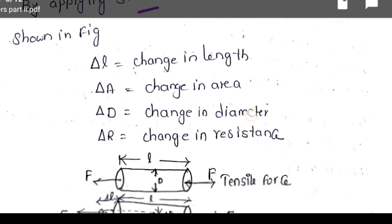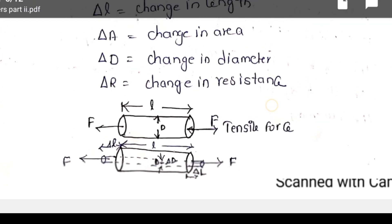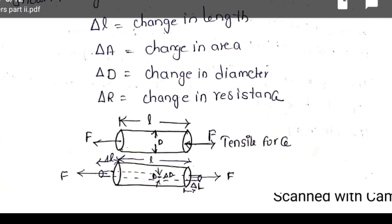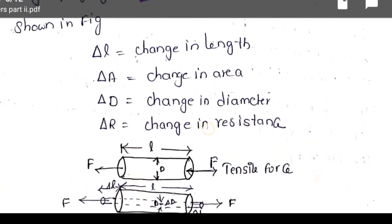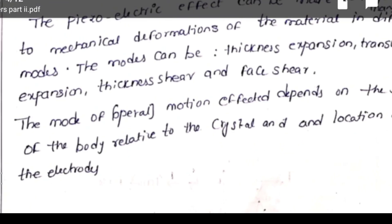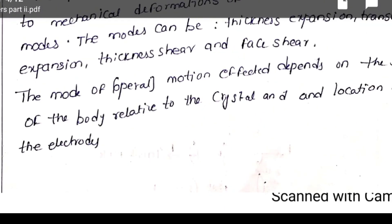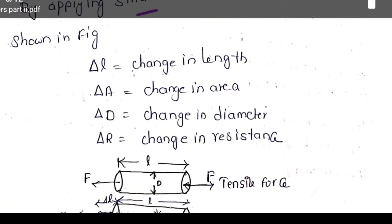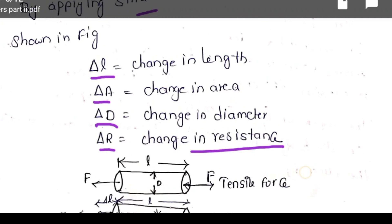Before applying the tensile force, we apply the tensile force or strain. Then the change in length is delta L. Delta L is the change in length. Delta A is the change in area. A small change in area is delta A. Change in diameter is delta D. Delta R is the change in resistance. You apply the force for this material, then there is a change in dimensions.